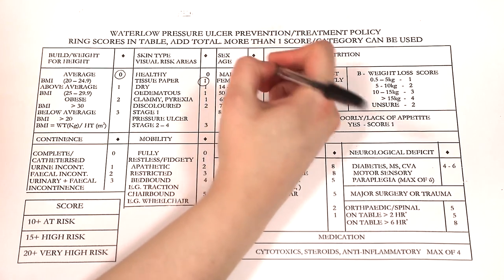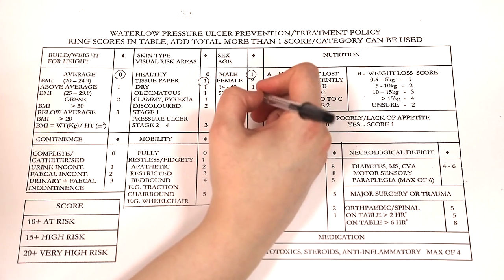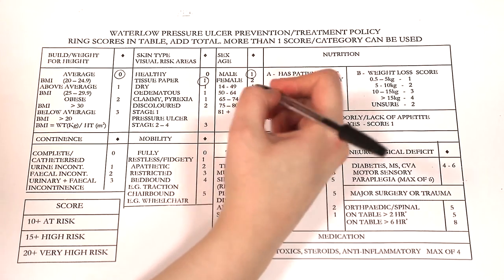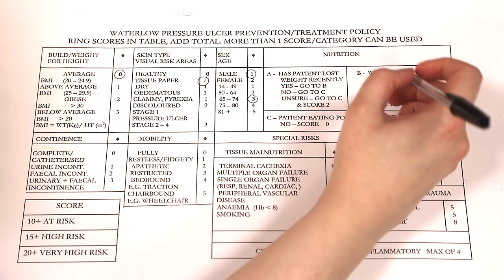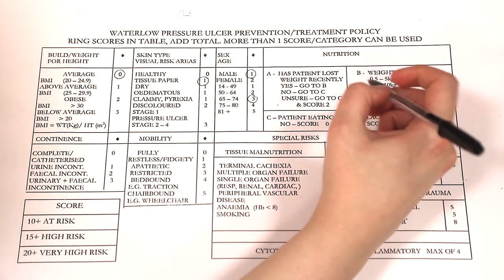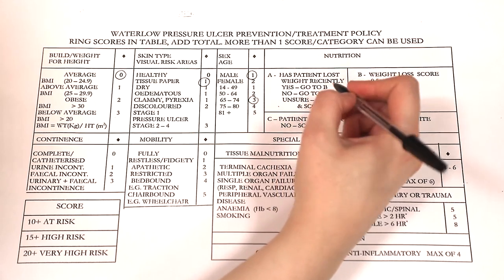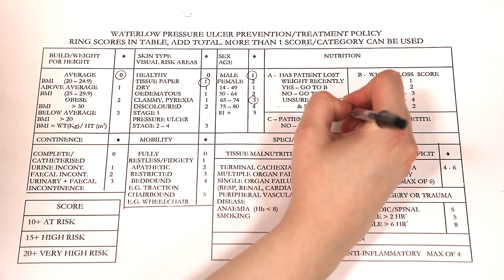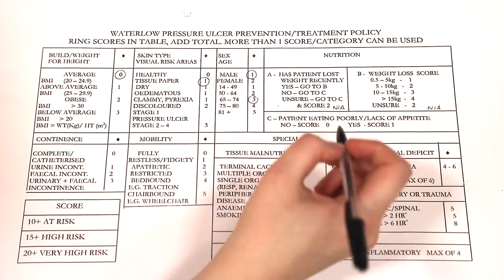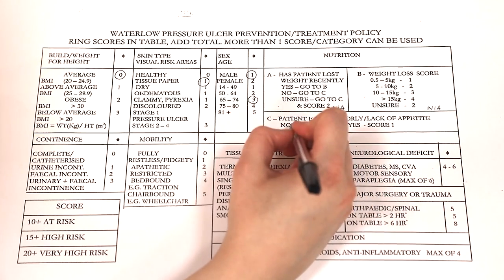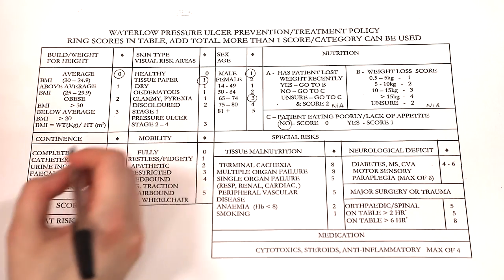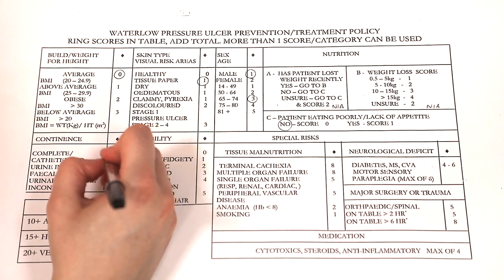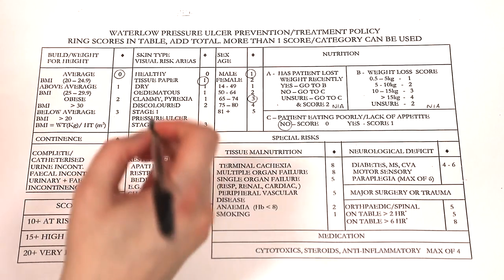Next, gender and age are considered. Research suggests that women are at higher risk of pressure ulcers than men, and this risk increases as age increases. Nutrition is a key risk factor; research shows that malnourished patients are significantly more likely to develop pressure ulcers. Continence must also be assessed, as maceration from urine and faeces can reduce the tensile strength of skin and increase the risk of pressure ulcers.